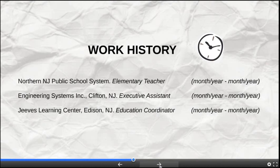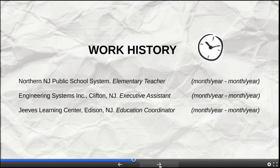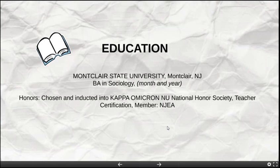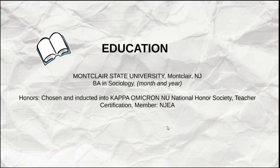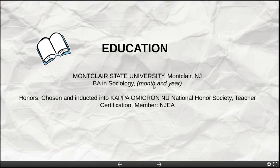After work history comes education, listed at the bottom since this individual has been out of school for a while. They still list the institution and degree, along with any honors. For someone who's been out of school for a while, you might insert just the month and year of graduation, and that's appropriate.